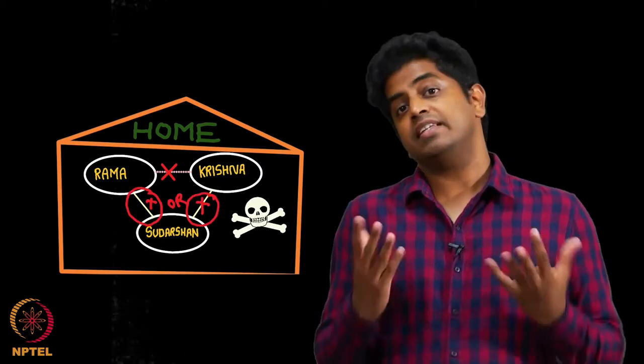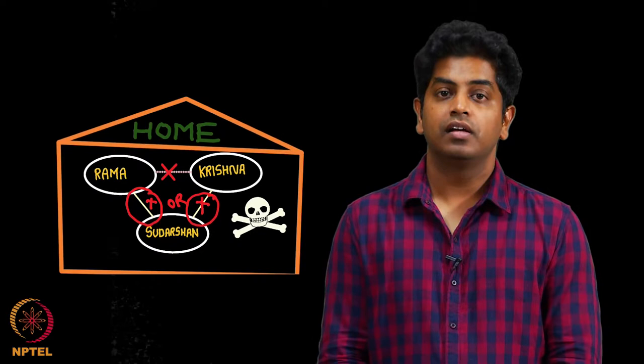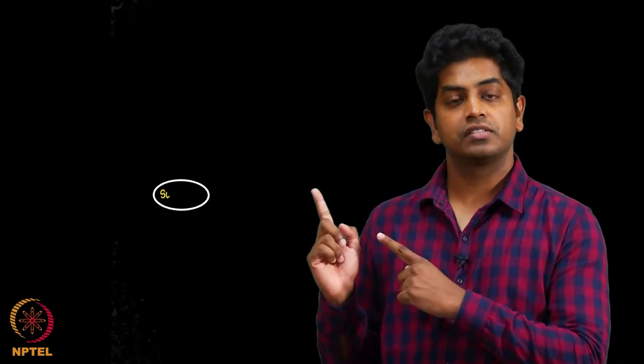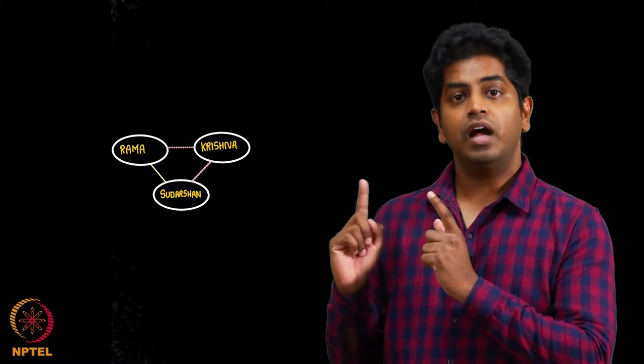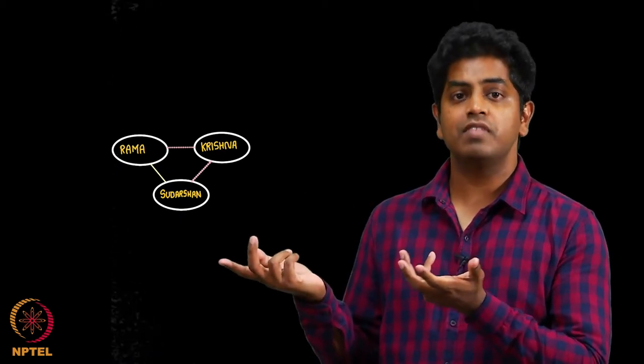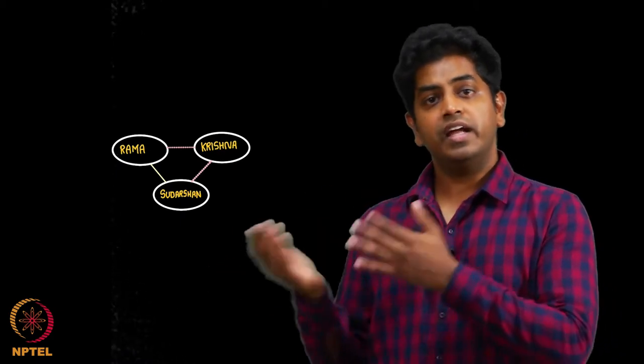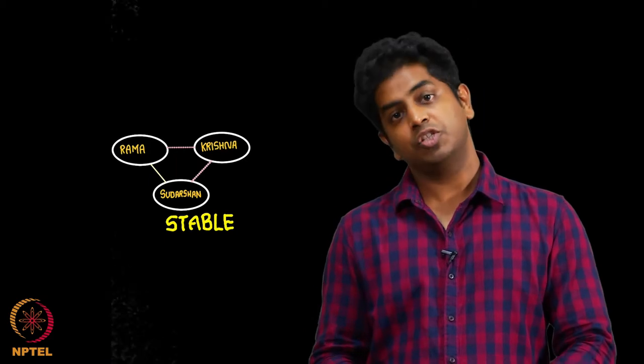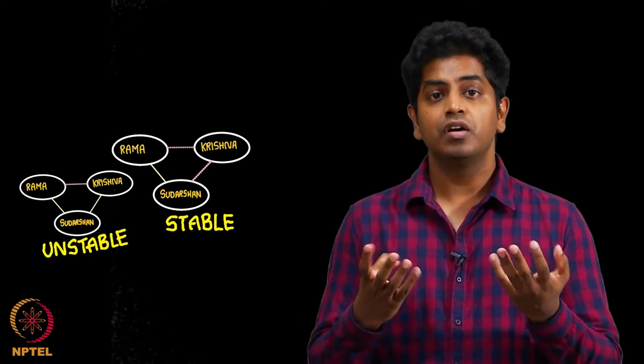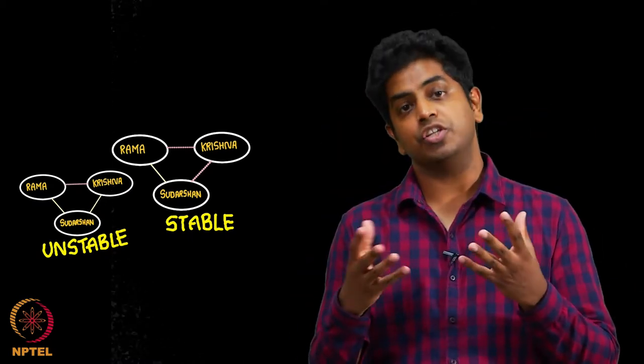In case Sudarshan starts hating Krishna, the triangle will look like this. Sudarshan likes Rama, Rama likes Sudarshan of course, and Rama of course hates Krishna as and always. Sudarshan has started hating Krishna. Now this is a stable situation. The previous one was actually an unstable situation. Unstable simply because there is pressure for the structure, friendship structure to change.